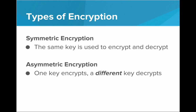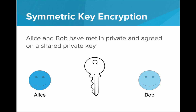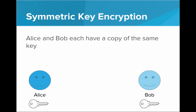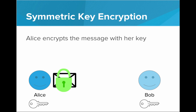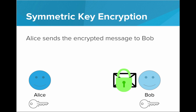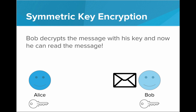Now, there are two types of encryption. There is symmetric encryption, where the same key is used for both encryption and decryption. Then there is asymmetric encryption, where one key encrypts and a different key decrypts. Let's see an example of symmetric key encryption. Suppose we have two people, Alice and Bob. They have met in private and agreed on a shared private key, so they both take a copy of this key with them. Now they are able to use this key to send encrypted messages to each other. Alice wants to send a secret message to Bob. She encrypts the message with her secret key — now it's locked and scrambled. She can send it over to Bob, trusting that no one else along the way will be able to understand it because they don't have the key. Bob decrypts the message with his key and is able to read it. This only worked because they were able to share the key — they met up in private and made copies of this shared key.